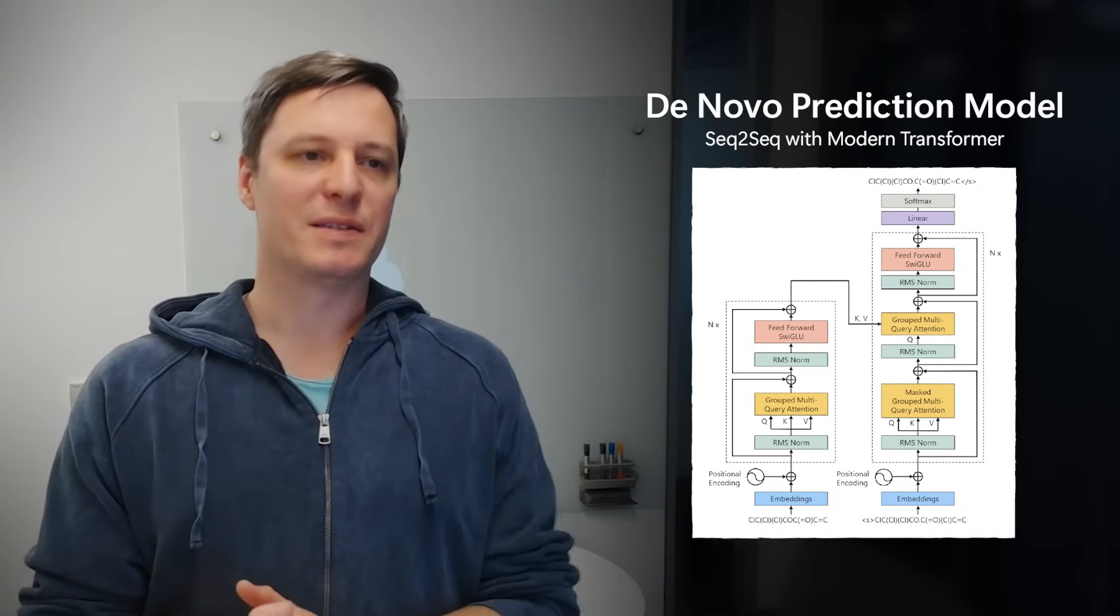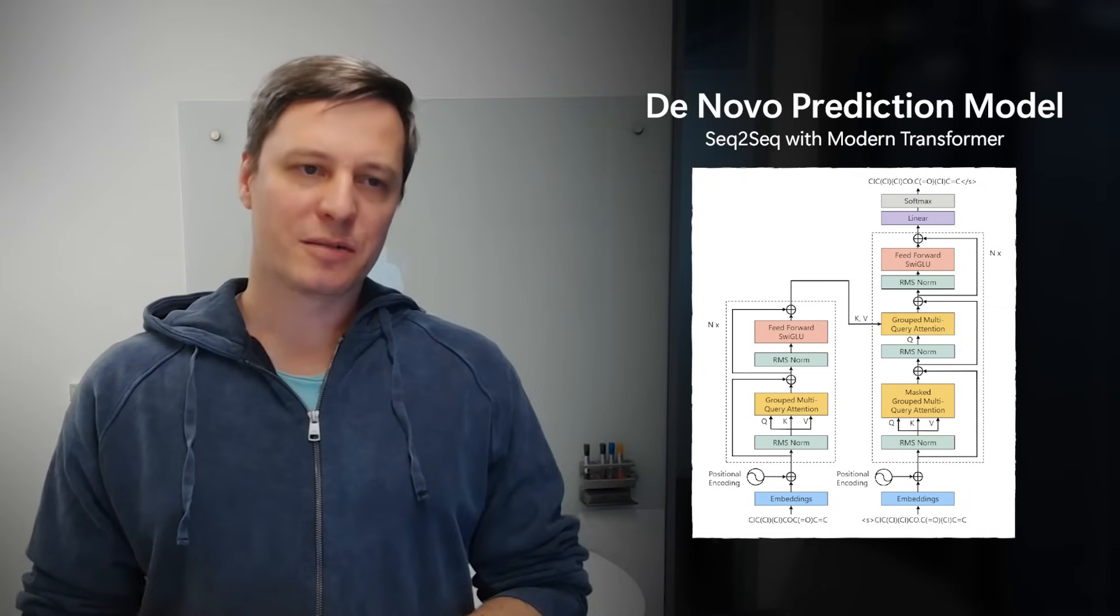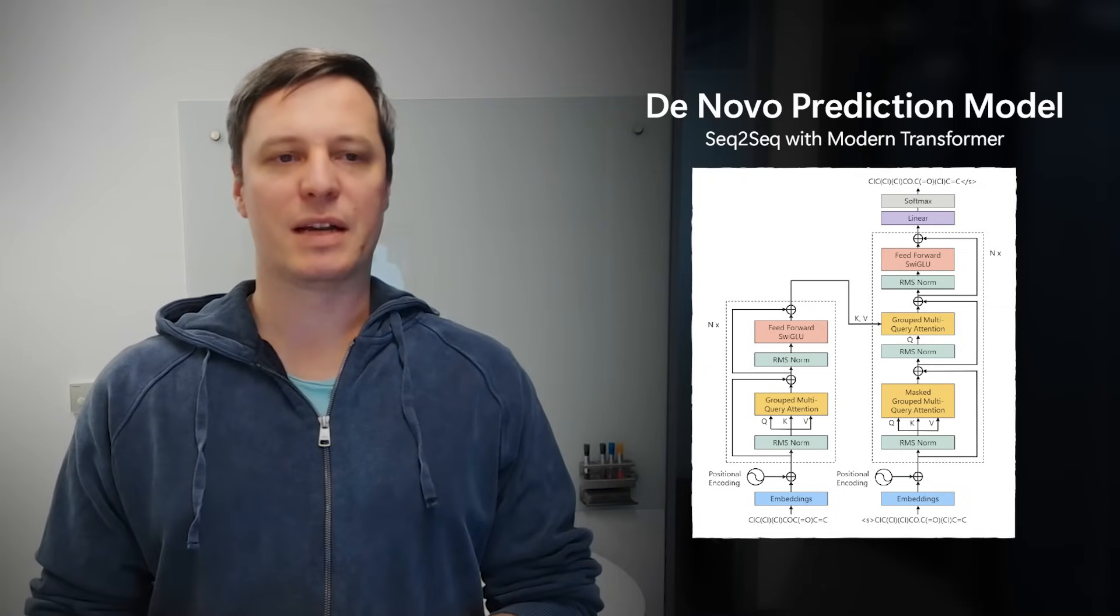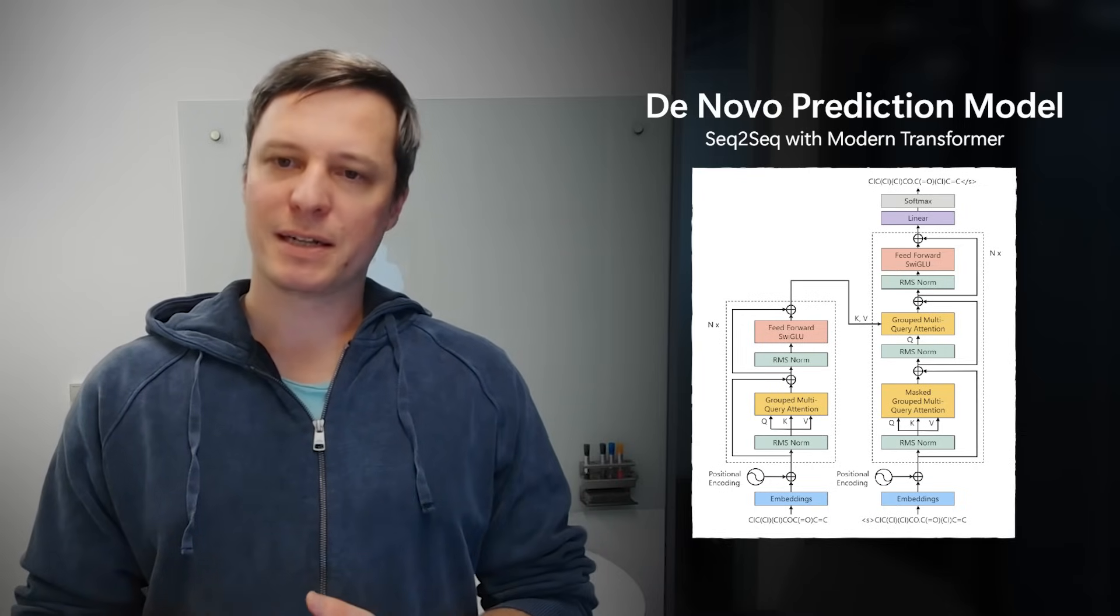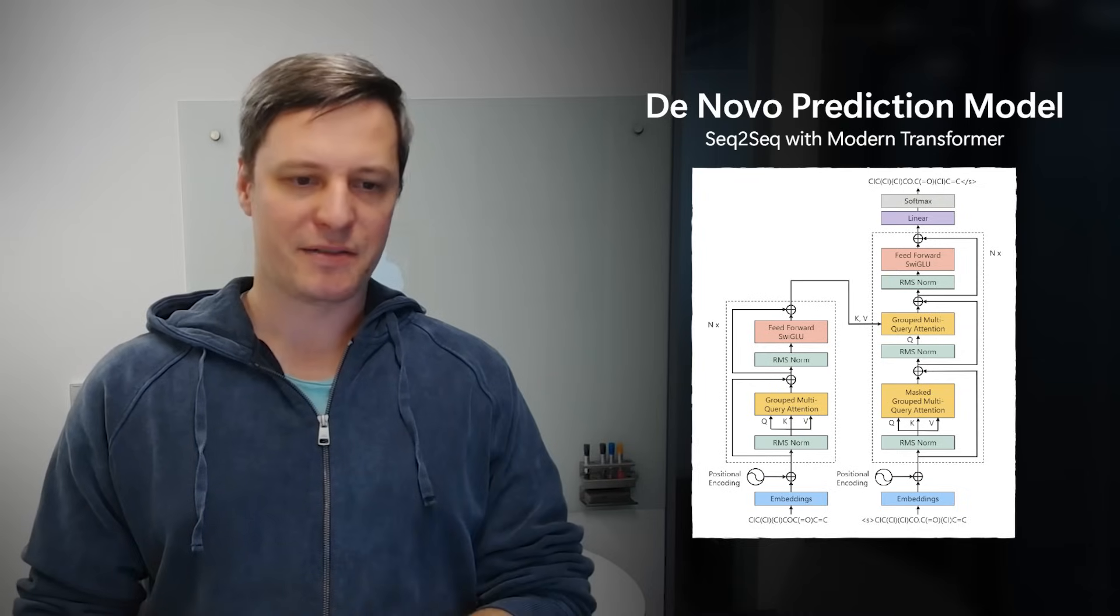Now, how do we implement these models? The de novo prediction model we can implement as a sequence-to-sequence model using a modern transformer, using grouped multi-query attention and modern activations.